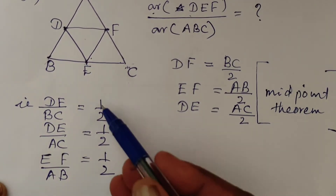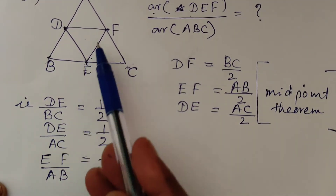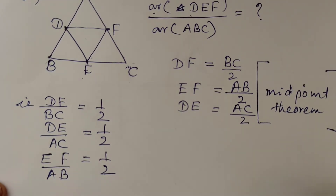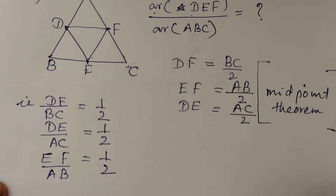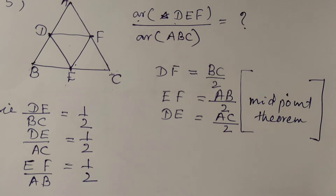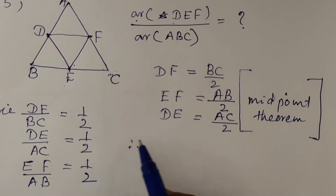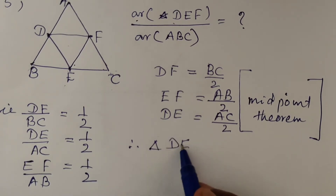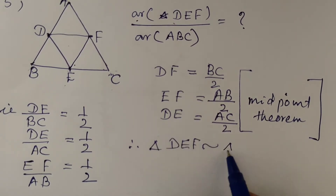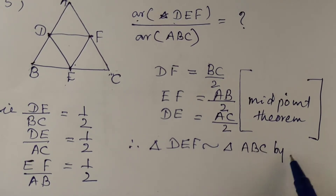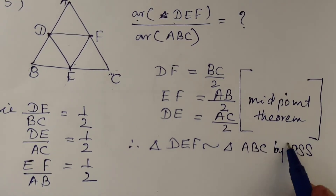Since all three sides are proportional, we can write that triangle DEF is similar to triangle ABC by SSS similarity.